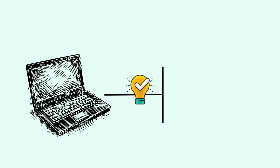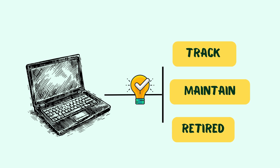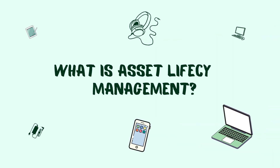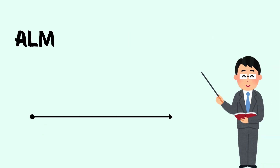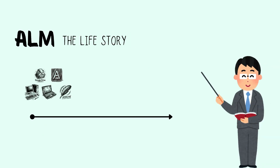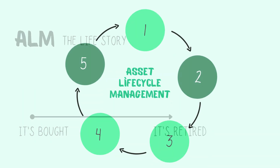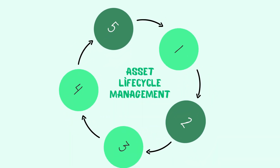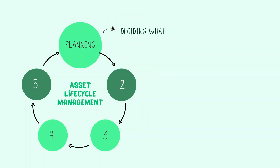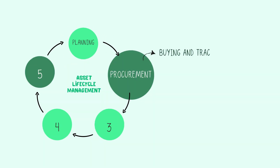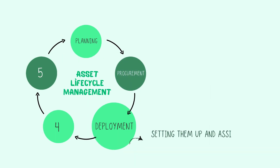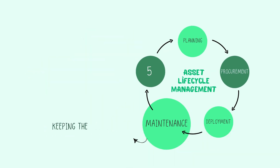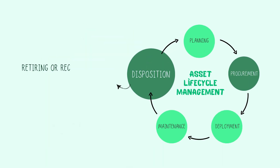Businesses need a structured approach to track, maintain, and retire devices properly. This is Asset Lifecycle Management, or ALM. ALM is basically the life story of every IT asset — from the moment it's bought to the day it's retired. Every IT asset goes through five key stages: Planning, Procurement, Deployment, Maintenance, and Disposition.